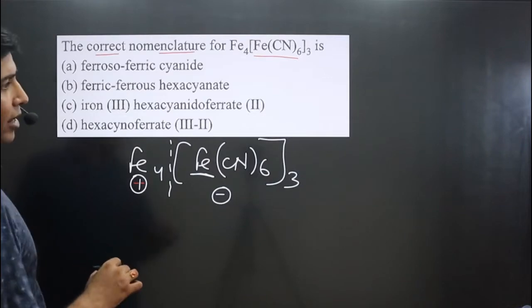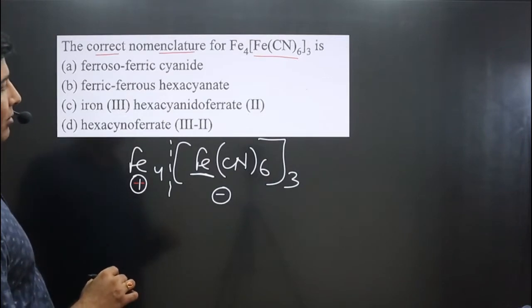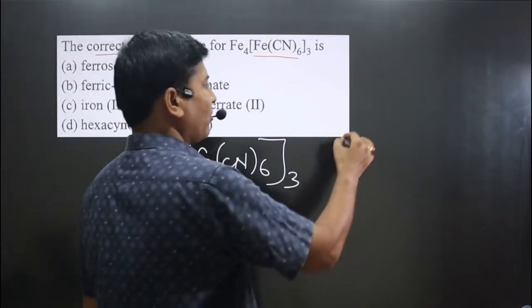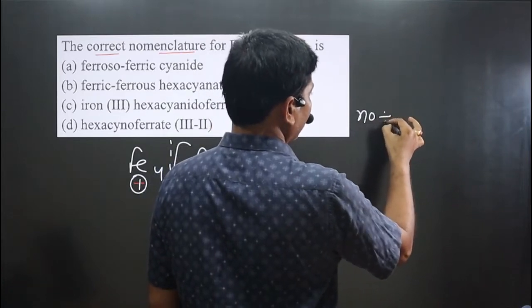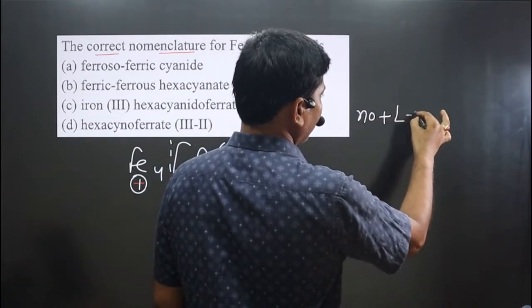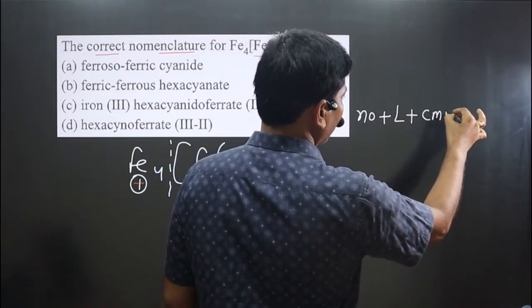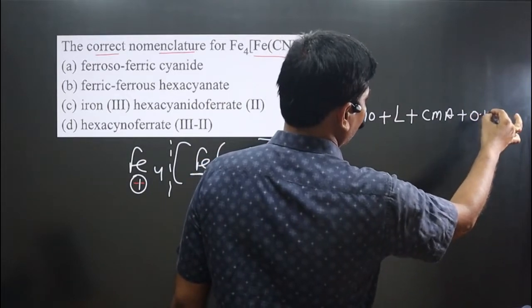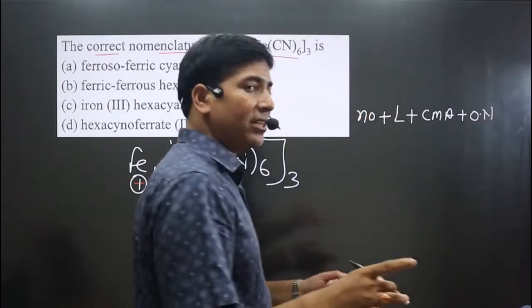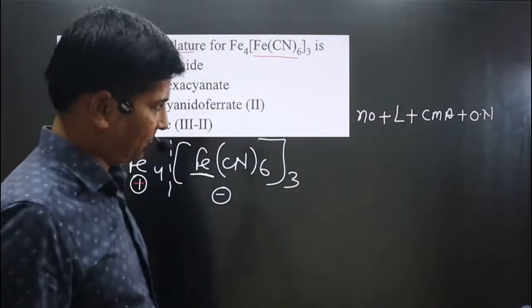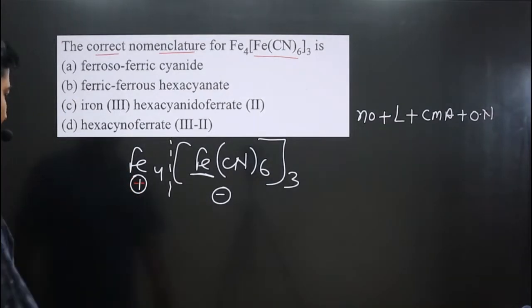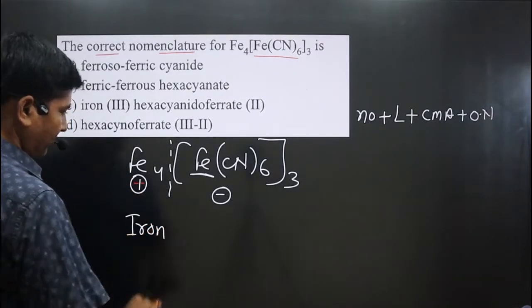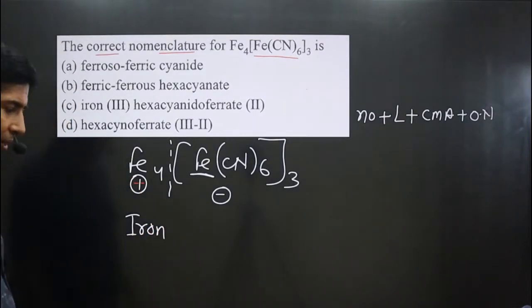For naming the complex, we follow this order: first, the number of ligands; then the type of ligand; then the central metal atom; and then the oxidation number of the central metal atom written in Roman numerals. For the counter ion, I write iron.